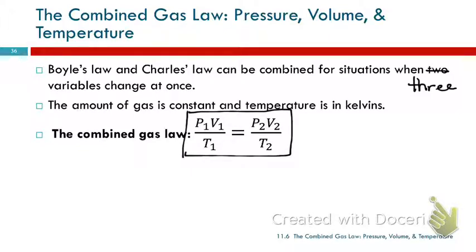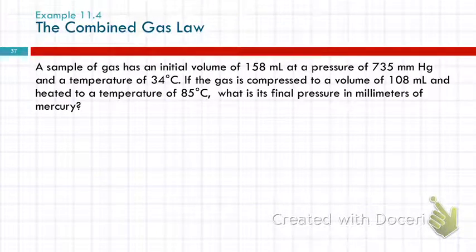We can use this in the same way that we used Boyle's Law and Charles' Law, and we've just got more numbers. So, a sample of gas has an initial volume of 158 milliliters at a pressure of 735 millimeters of mercury and a temperature of 34 degrees Celsius. If the gas is compressed to a volume of 108 milliliters and heated to a temperature of 85 degrees Celsius, what is its final pressure in millimeters of mercury?